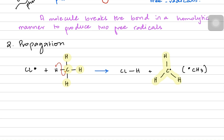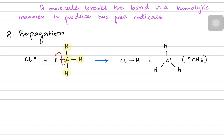The methyl radical (CH3•) also seeks stability by breaking another bond. It finds a chlorine molecule (Cl2), and since the methyl radical has enough energy, it breaks the Cl–Cl bond. One chlorine atom bonds with the methyl group to form CH3Cl (chloromethane), while the remaining chlorine atom becomes a new chlorine radical. This way the reaction keeps going.